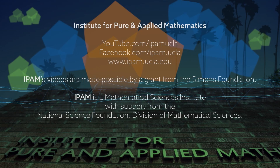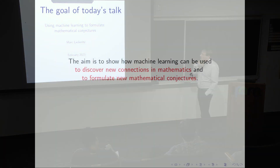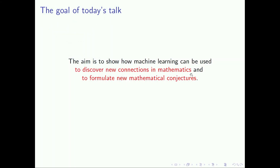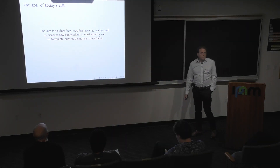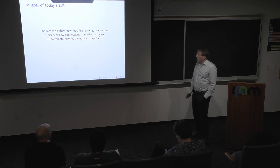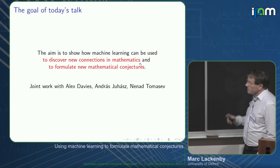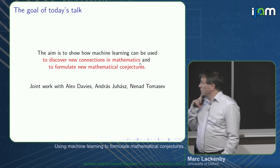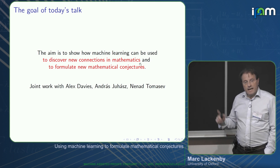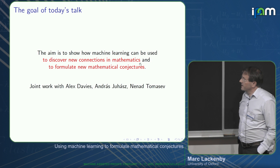I'm going to be talking about a novel use of machine learning as a tool for pure mathematicians — how you can use machine learning to discover new connections in mathematics and to help formulate new mathematical conjectures. Most of this is joint work with Alex Davies, Andras Juhasz, and Nenad Tomasef. Alex and Nenad are at DeepMind, and Andras is my colleague at Oxford.